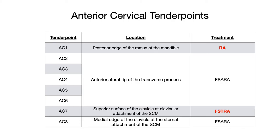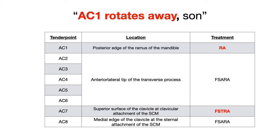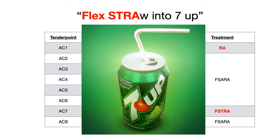I have some mnemonics to help you remember. For AC1, say: 'AC1 rotates away, son.' That'll help you remember that it's not F-CERA, but rotation away. For AC7, the treatment is F-STRAW — think of flexing a straw into 7up. 7up reminds you of anterior cervical tender point number 7, and a flexed straw reminds you of flexion, side bend towards, rotation away. If you memorize those two mnemonics, the only other thing you need to know is F-CERA for all the other anterior cervical tender points.